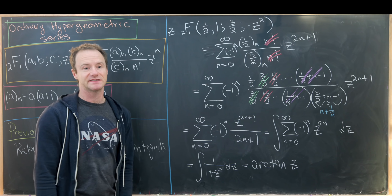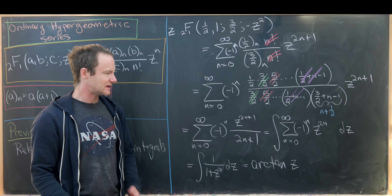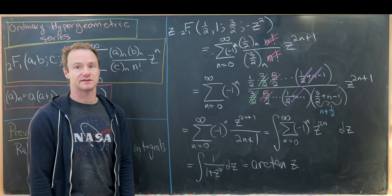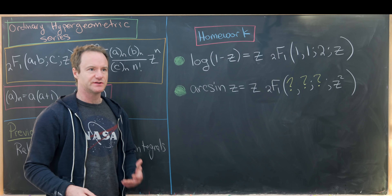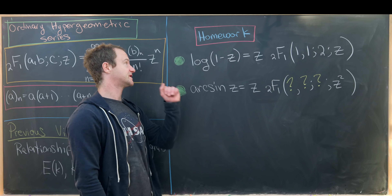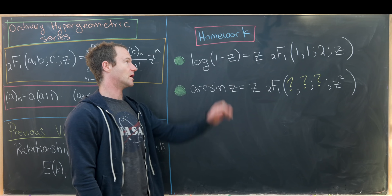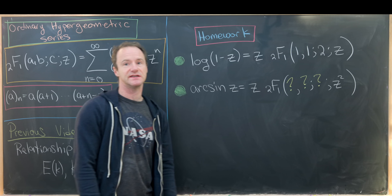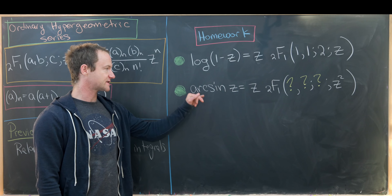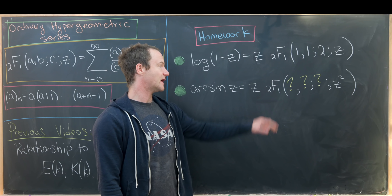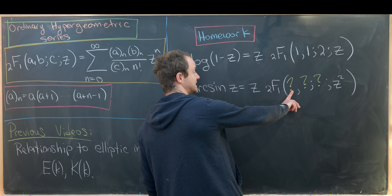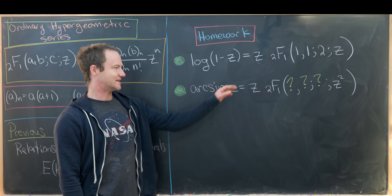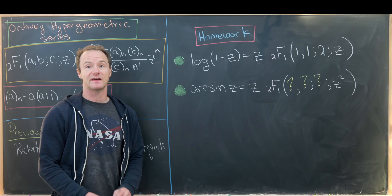So that's another special case. I'll leave a couple of homework problems for similar calculations. First, show that log(1-z) = z · 2F1(1, 1; 2; z). Second, show that arcsin(z) = z · 2F1(a, b; c; z²) and find the entries a, b, c. These are nice little exploratory exercises.